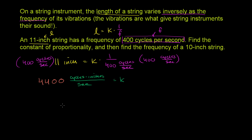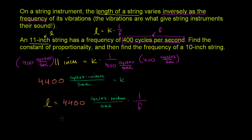That is equal to our constant of proportionality. So we can say that the length is equal to 4,400 cycles times inches per second, times 1 over the frequency.